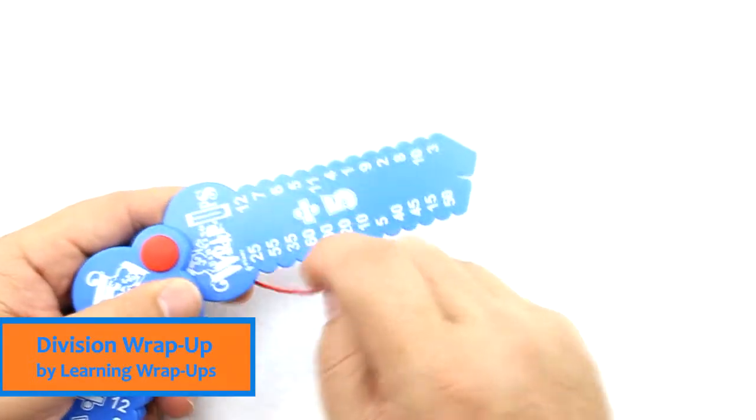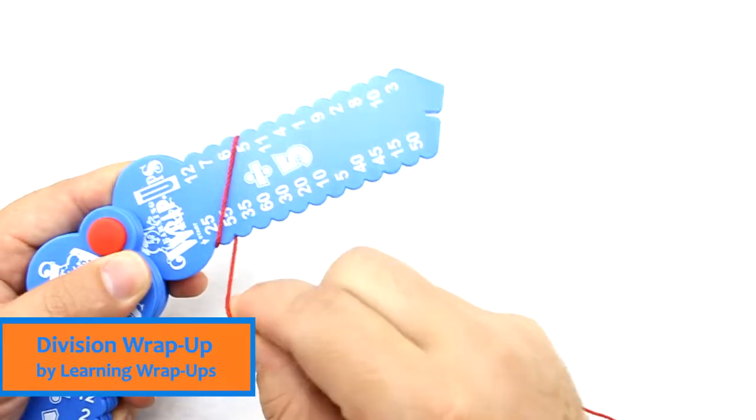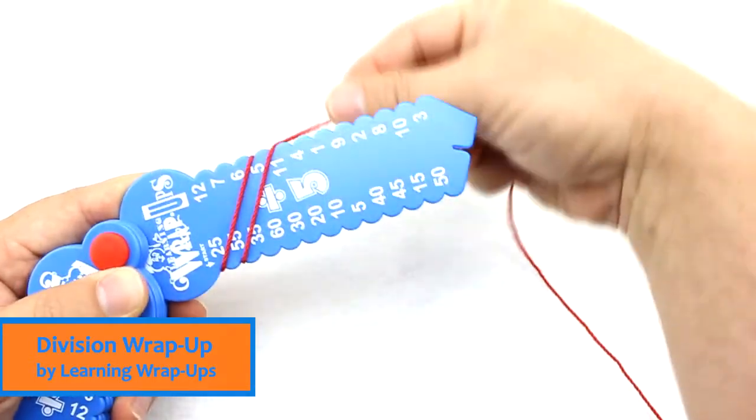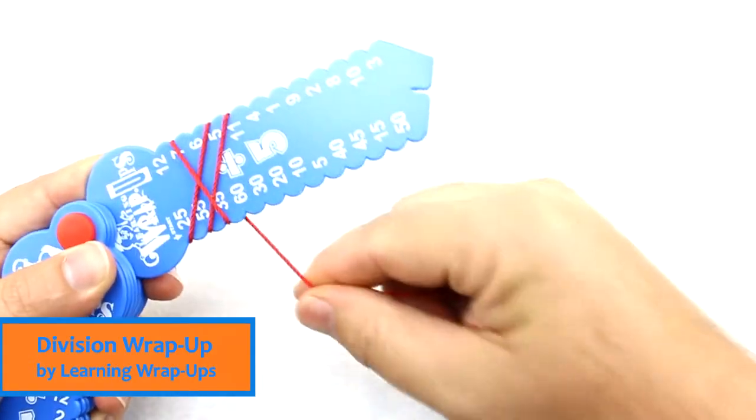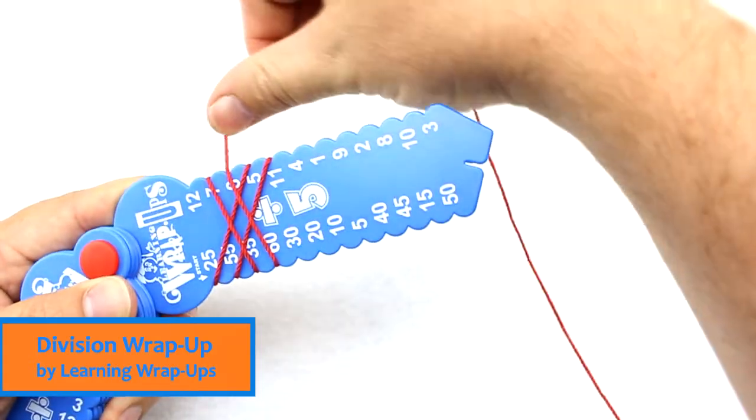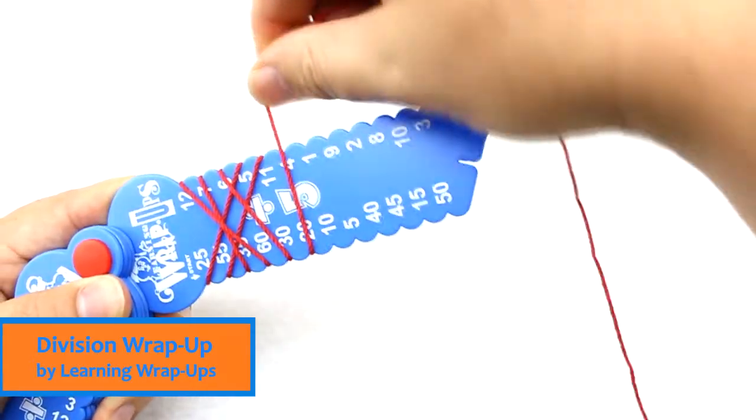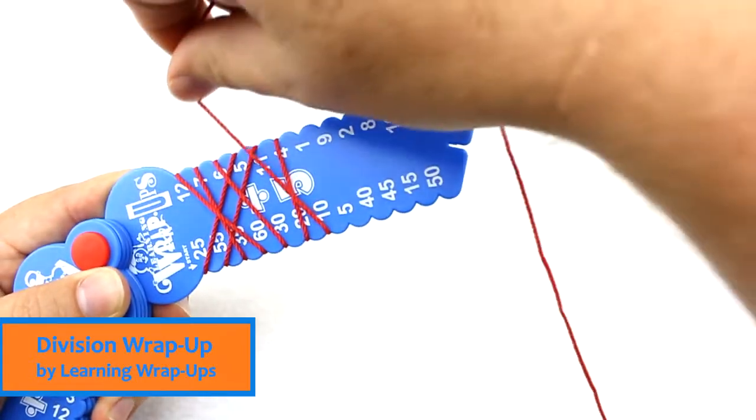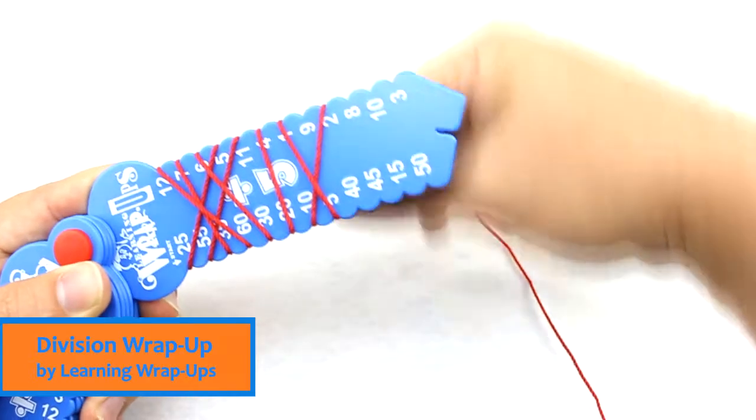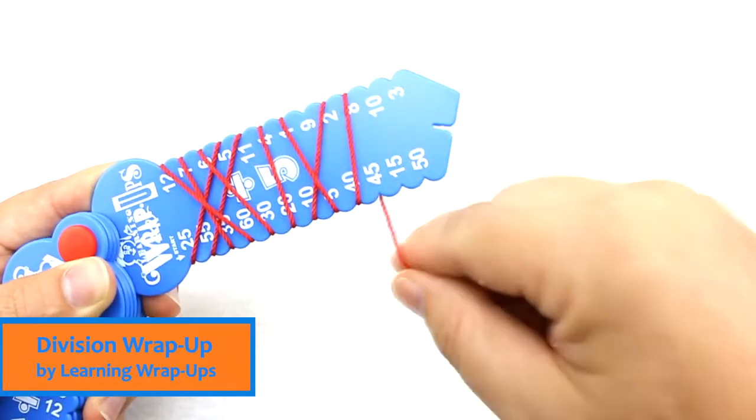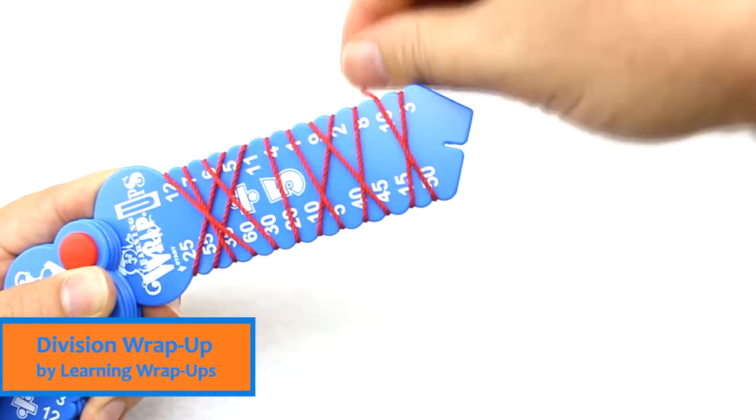So if we take 25 and divide it by 5, that is going to be 5. 55 divided by 5 is 11, 35 divided by 5 is 7, 60 is 12, 30 is 6, 20 is 4, 10 divided by 5 is 2, 5 divided by 5 is 1, 40 divided by 5 is 8, 45 is 9, 15 is 3, and 50 is 10.